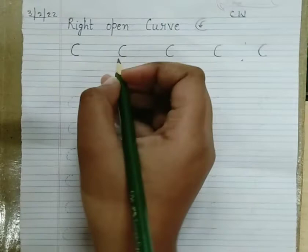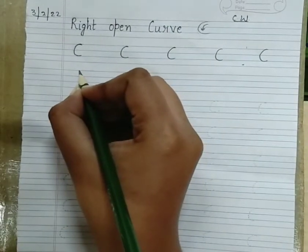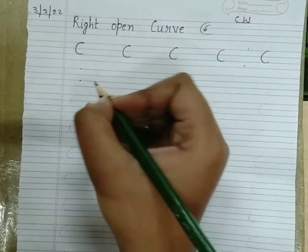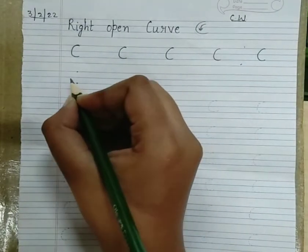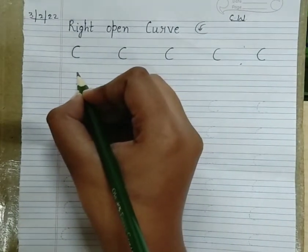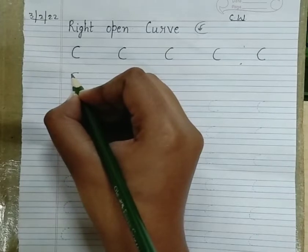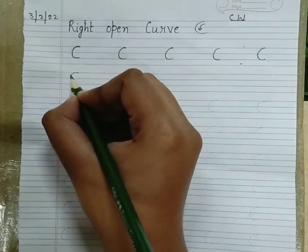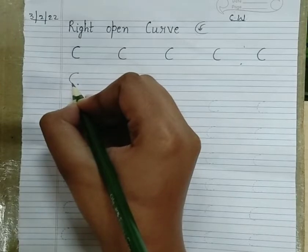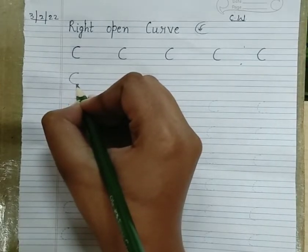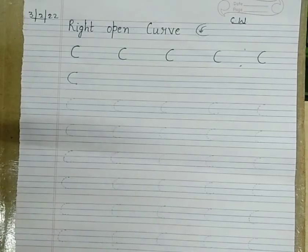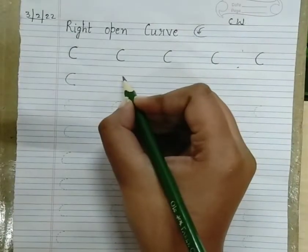So I am going to teach you today how we will make it. First of all, we will put two dots, and now we will join these dots by making a curve. You have to take your pencil like this and take your hand to the right side. This is how you will make a right open curve.